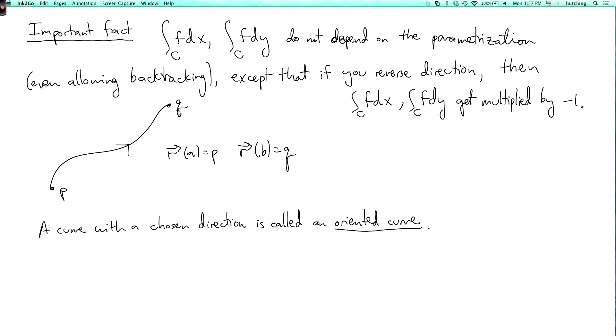So here the curve C is oriented—I mean the parametrization orients it. But we could sort of forget about the parametrization and just still keep track of the arrow, okay?